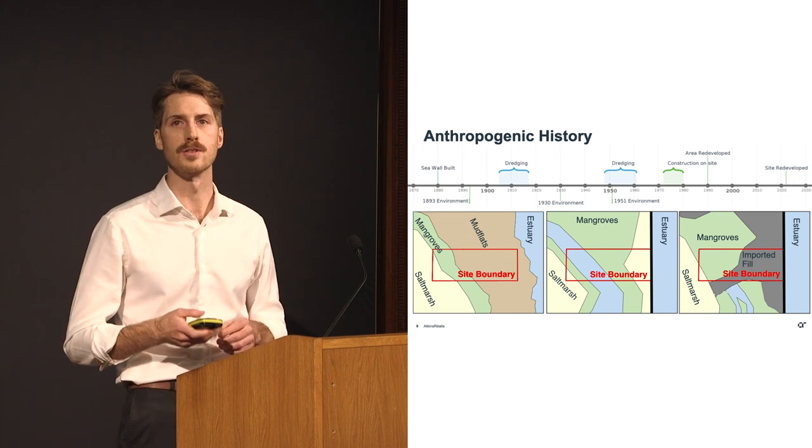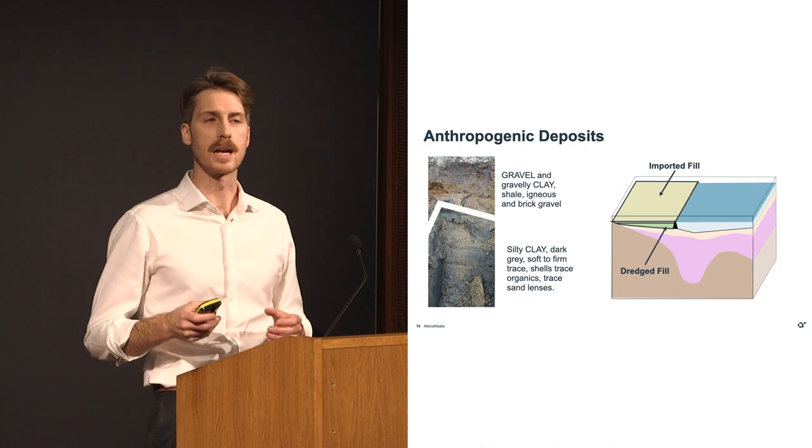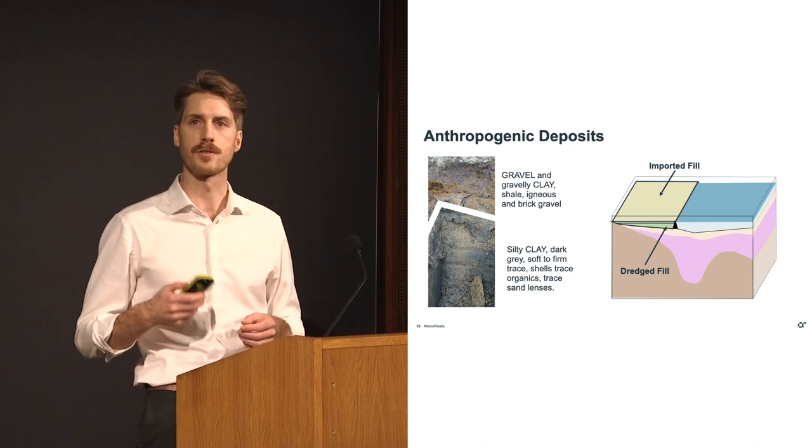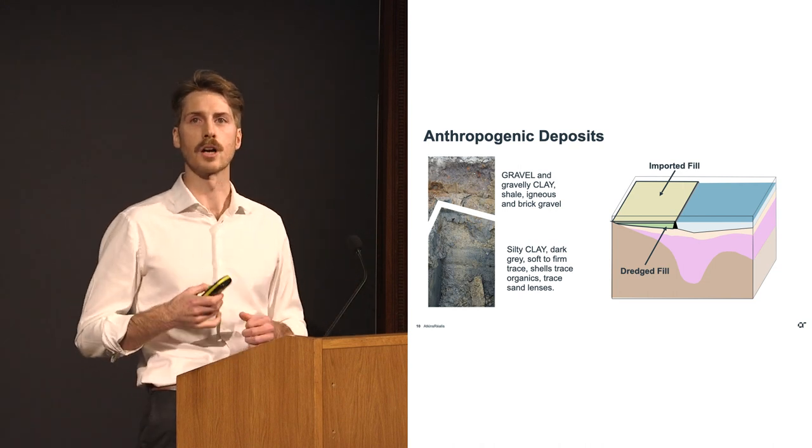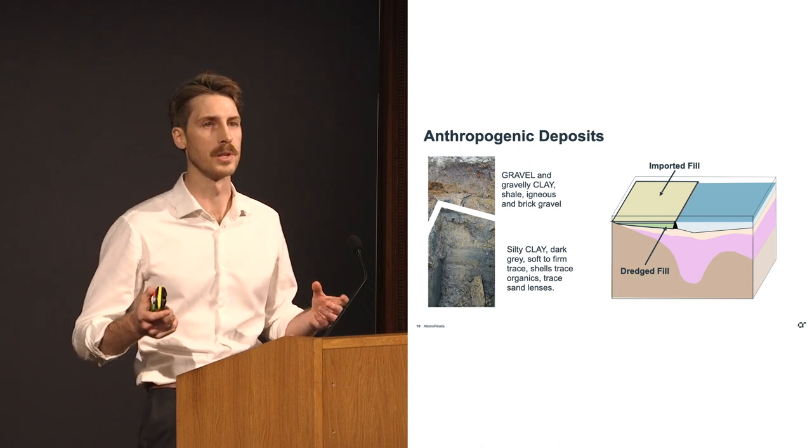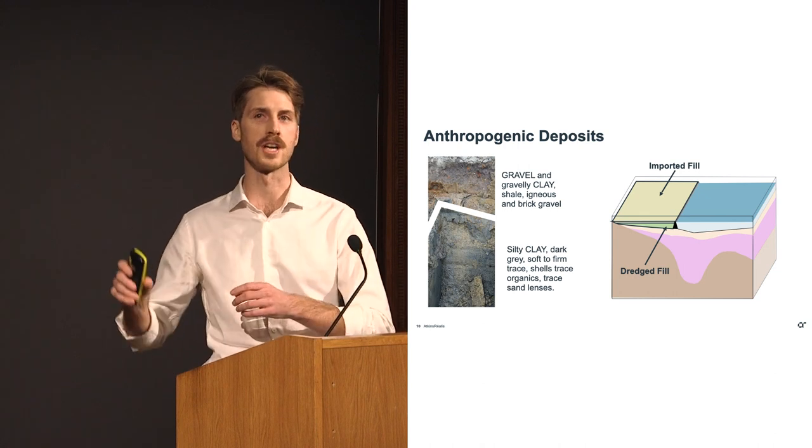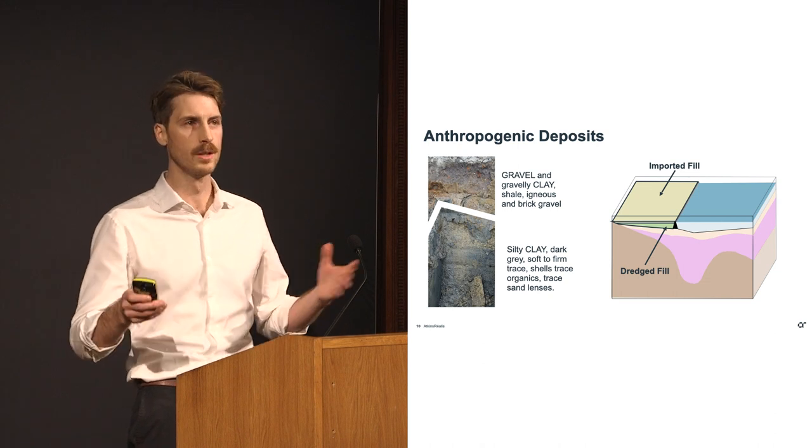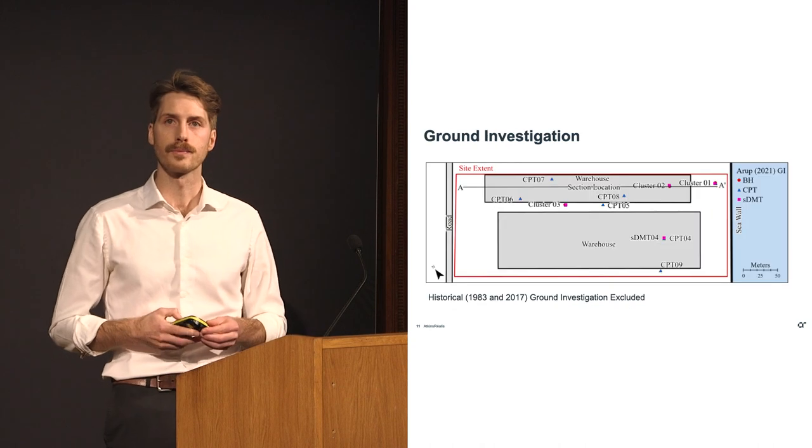This happened from the north traveling down south through the site, and you can see a clip of the environment on the right-hand side. As a result of these human activities on site, there's two distinct deposits. The first is the dredged fill from the land reclamation. This is, and this may sound familiar, silty clay, dark grey, soft to firm, trace shells, and sand lenses. And this was locally sourced in many cases, as you saw from the clip of the site and the adjacent estuary from as little as a few hundred meters away. Overlying this is the imported fill gravel, clay gravel with various inclusions.